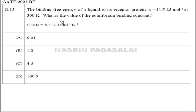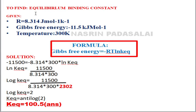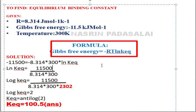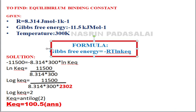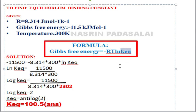The first question: the binding free energy of a ligand to its receptor is minus 11.5 kilojoules per mole at 300 Kelvin. What is the value of the equilibrium binding constant? A value of R is also given. This is an MCQ type question. The formula is: Gibbs free energy equals minus RT ln(K_EQ), where K_EQ is the equilibrium binding constant.